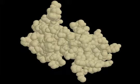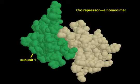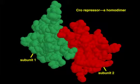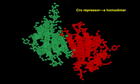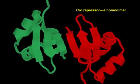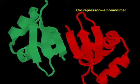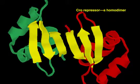Many proteins are composed of multiple polypeptide chains, or subunits. The crow repressor, for example, is a homodimer formed of two identical subunits. The subunits join in a head-to-head fashion as two small beta sheets, one from each subunit, zipper up and form a larger beta sheet.